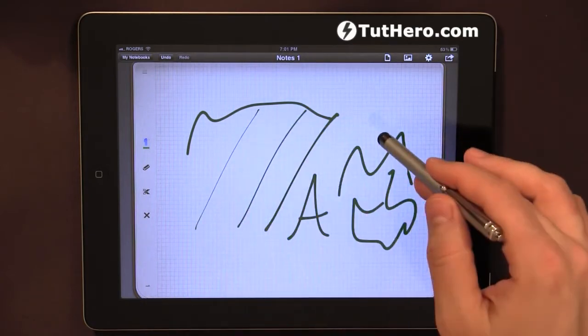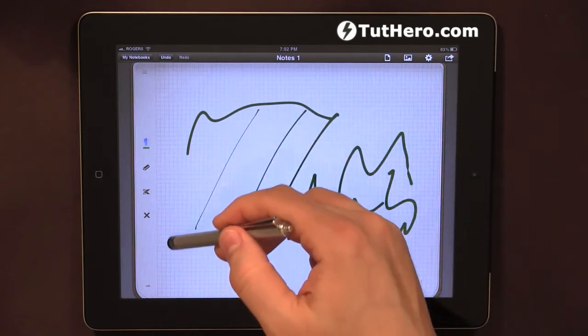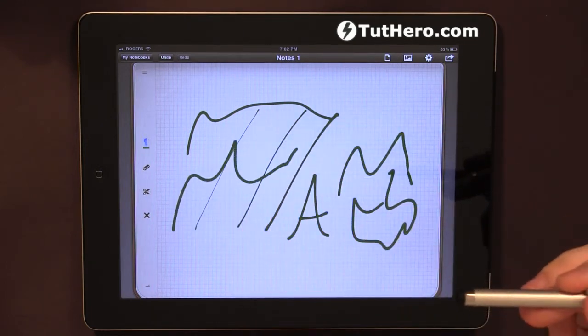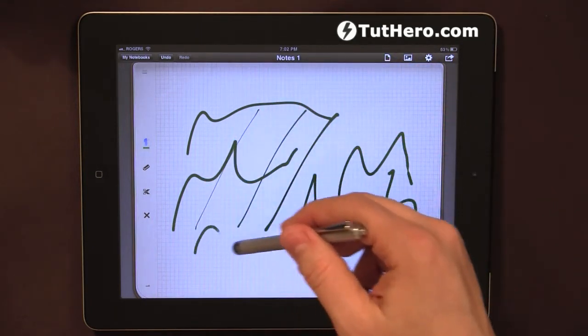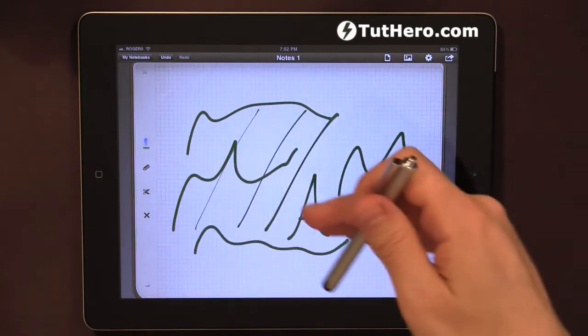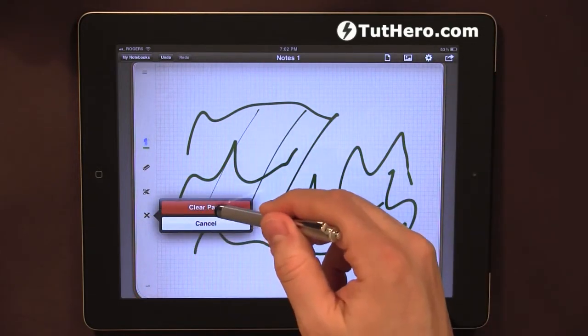The interesting thing is you don't have to write and then release for it to turn into a soft line. While you're drawing, it's already softening everything you do. I'm just going to clean this with the clean page button.